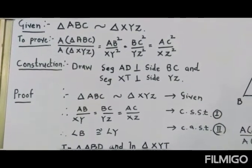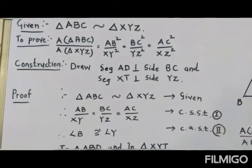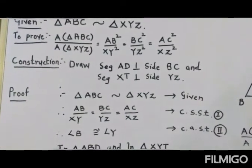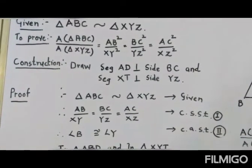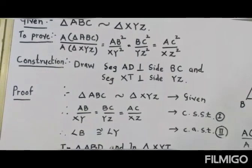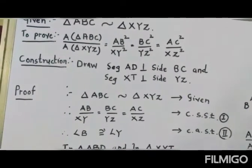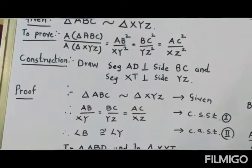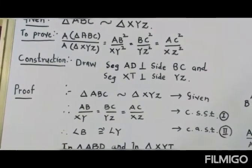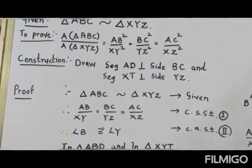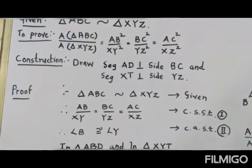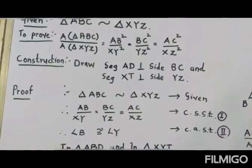In the Given, we write: triangle ABC is similar to triangle XYZ. What the statement says to Prove: the ratio of the areas of the two triangles — that is, area of triangle ABC upon area of triangle XYZ — is equal to the ratio of the squares of their corresponding sides, that is AB² upon XY².